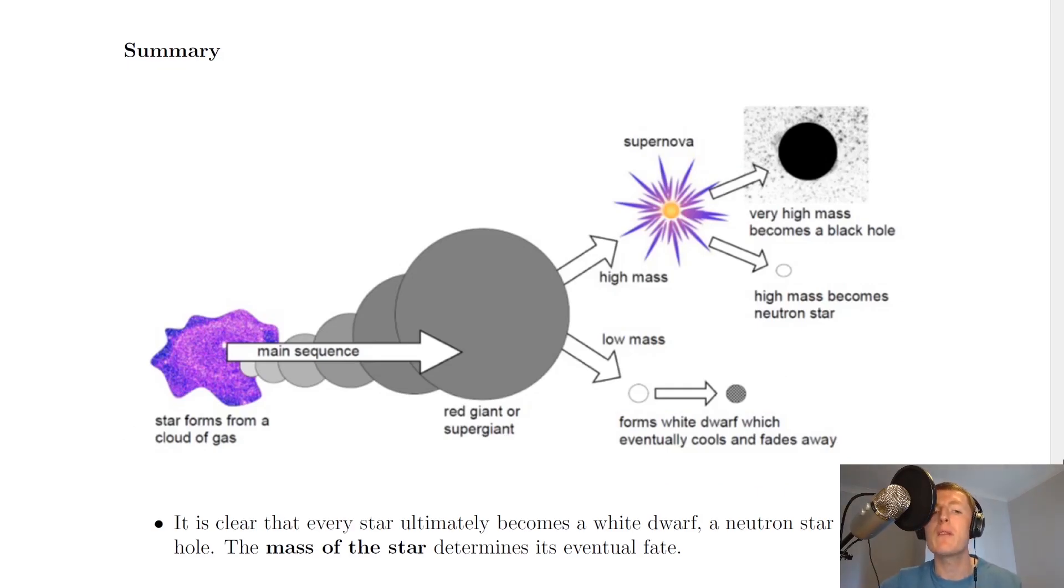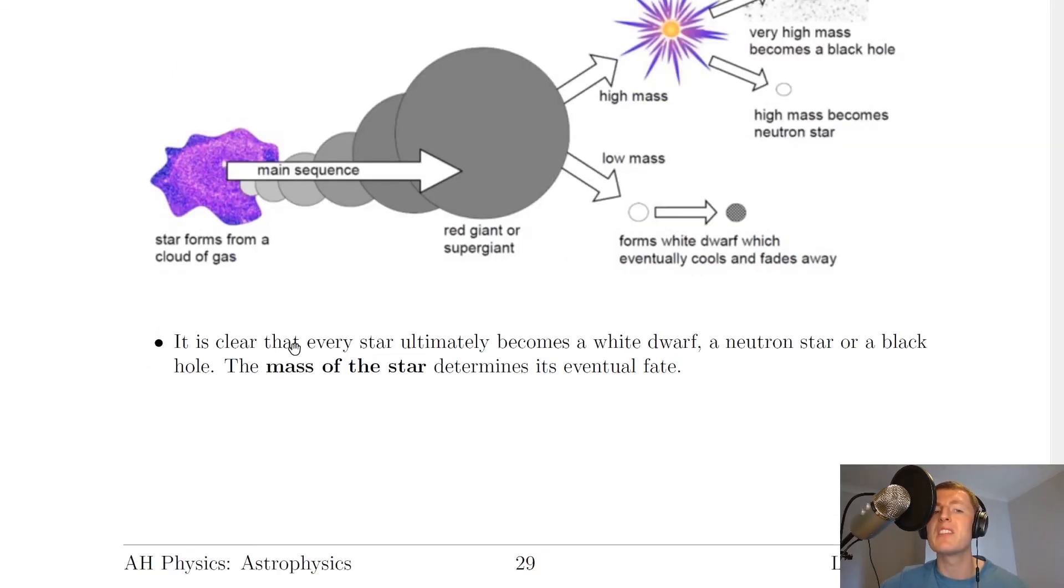All stars will start off in the same way. A star forms from a cloud of gas, and then becomes a main sequence star, where it either then becomes a red giant or a supergiant. If it's a low mass star, similar to the mass of our sun, then it eventually forms a white dwarf, which eventually cools and fades away. But if it's a high mass star greater than the mass of our sun, then a supernova is formed. What is left, if it's a high mass star, is a neutron star. But if we've got a very high mass star, then it becomes a black hole. It is clear that every star ultimately becomes either a white dwarf, a neutron star, or a black hole. The mass of the star determines its eventual fate, despite all stars starting off as main sequence stars.